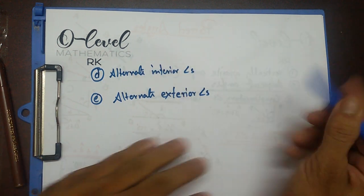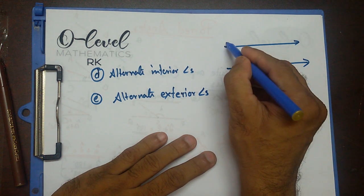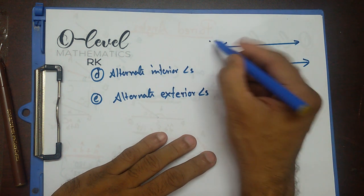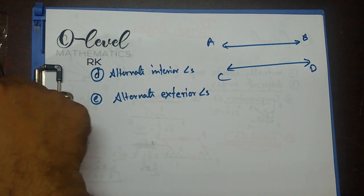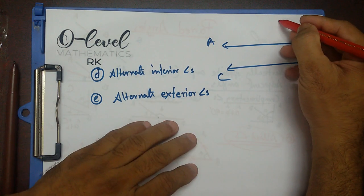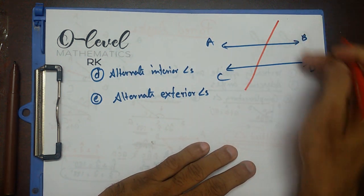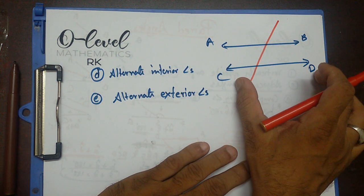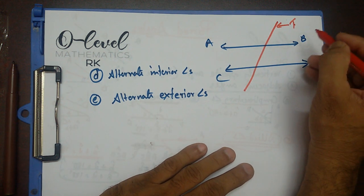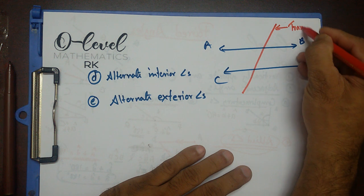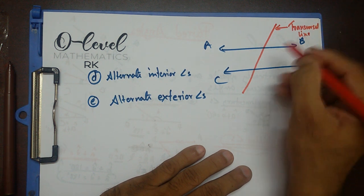To understand these two, we need a series of lines. Let's say two straight lines AB and CD, and one line that intersects these two lines. They may or may not be parallel — in this case I put them parallel. This intersecting red line is known as the transversal line.